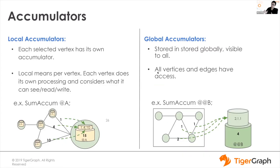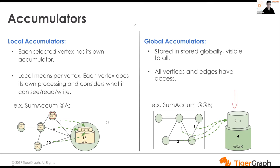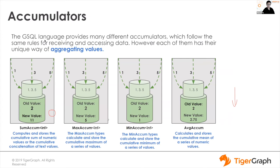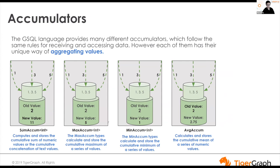TigerGraph has two accumulator types. Local accumulators are defined on and attached to each vertex. Global accumulators are defined in global memory, outside the graph. We also have different aggregation types — the first part of the accumulator definition specifies how it aggregates incoming messages. It follows the map-reduce approach: at the map stage, vertices and edges send messages; at the reduce stage, accumulators aggregate those messages into a new value.